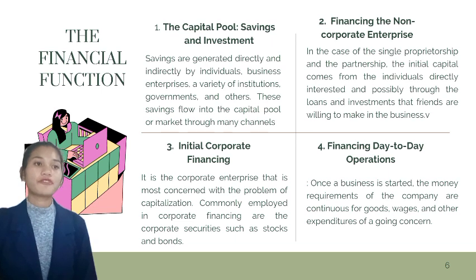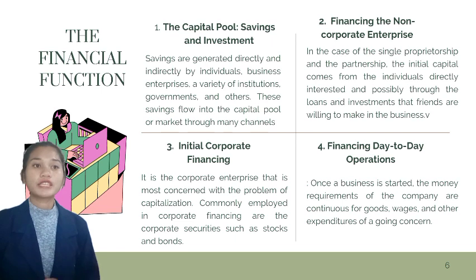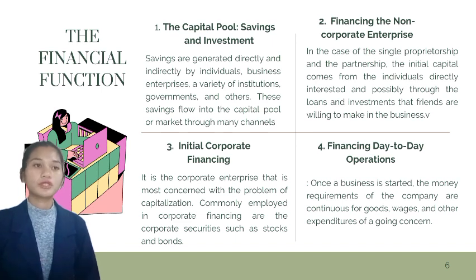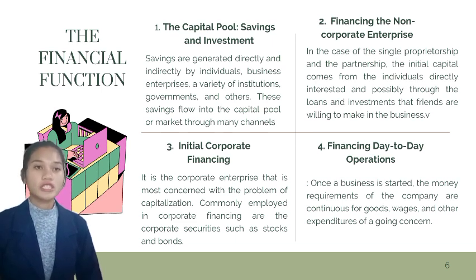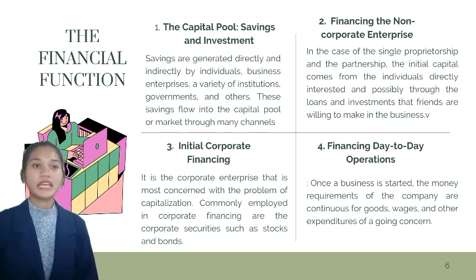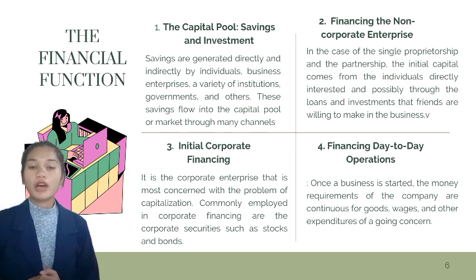The second factor is financing the non-corporate enterprise. In the case of a single proprietorship and partnership, the initial capital comes from the individuals directly interested. In addition to cash, these individuals may contribute actual land, building, machinery, and materials. Introduction of a new enterprise through cash and property contribution is one of the oldest forms of business promotion.